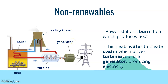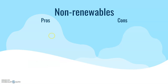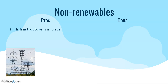How do we actually get electricity from fossil fuels? In power stations, they are burned, and that burning produces heat. That heat heats water, which creates steam, and that steam drives a turbine which spins a generator — and it's that generator that produces electricity.